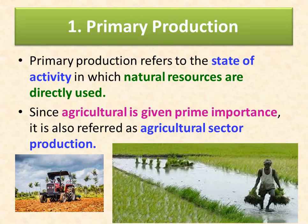Now, what is primary production? Primary production refers to the state of activity in which natural resources are directly used. Since agriculture is given prime importance, it is also referred to as agricultural sector production. It includes industries like agriculture, forestry, fishing, mining, and oil extraction — all extracting the gifts of nature from the earth surface, beneath the earth, and from the oceans.